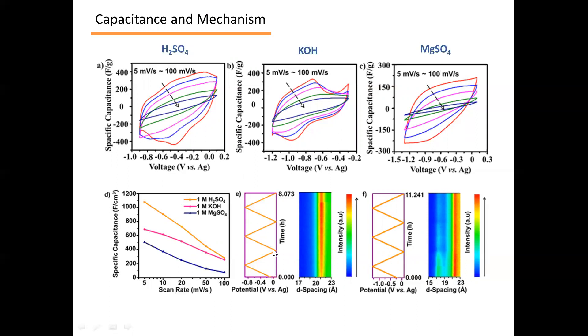Moreover, in-situ XRD technique was used to study the structural changes during the electrochemical charging in 1 molar sulfuric acid and 1 molar magnesium sulfate. There was almost no change in the d-spacing during the cycling because the space is large enough to accommodate the intercalation of ions without affecting the layer structure of MXene electrode, leading to the stable performance of niobium carbide MXene in energy storage devices.